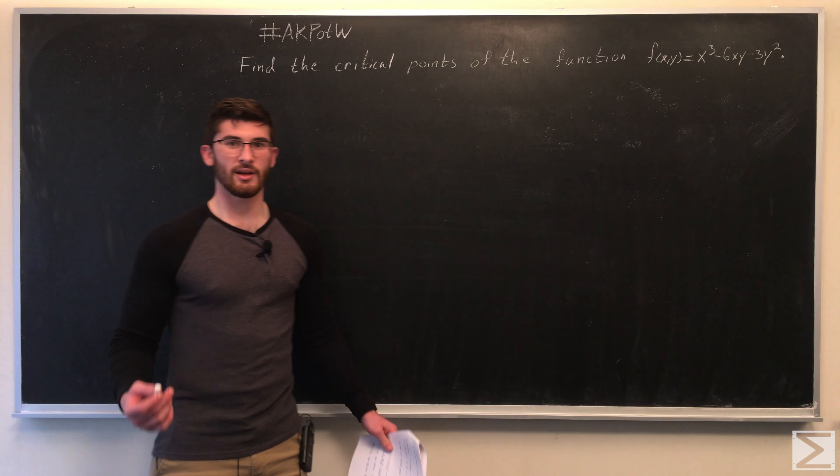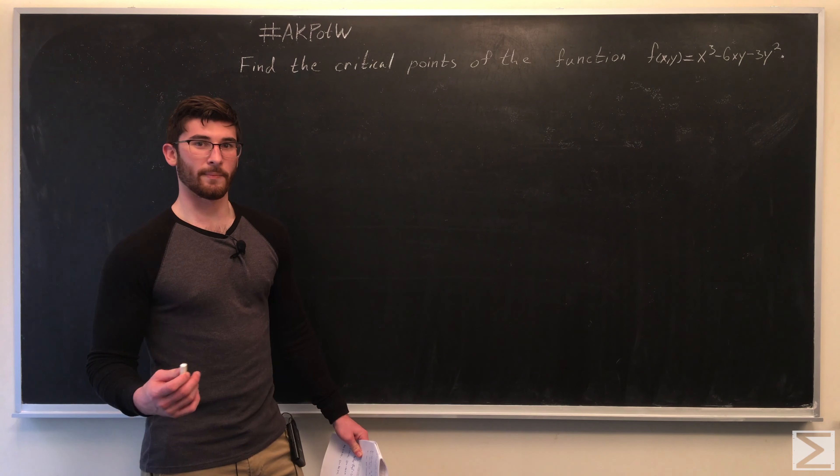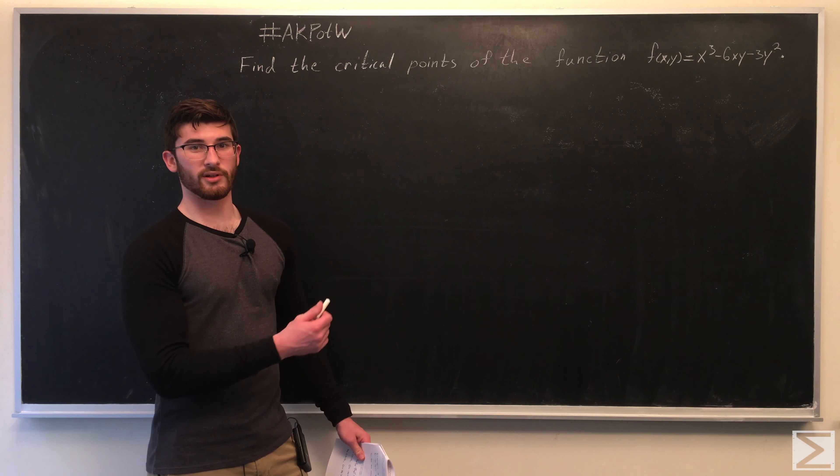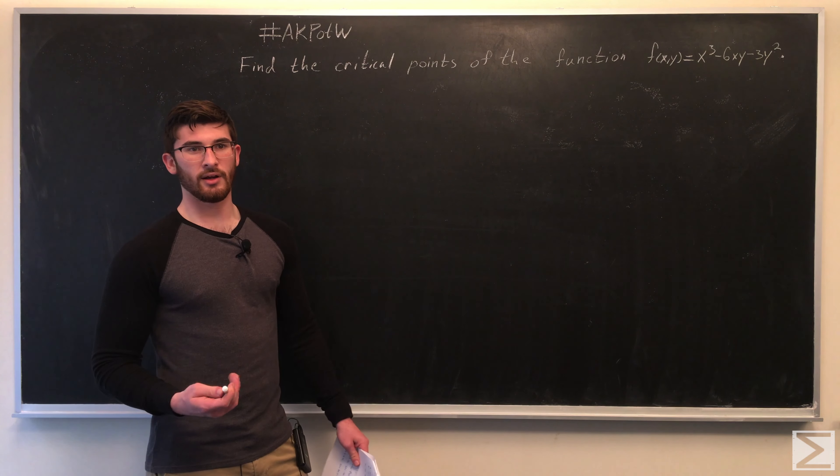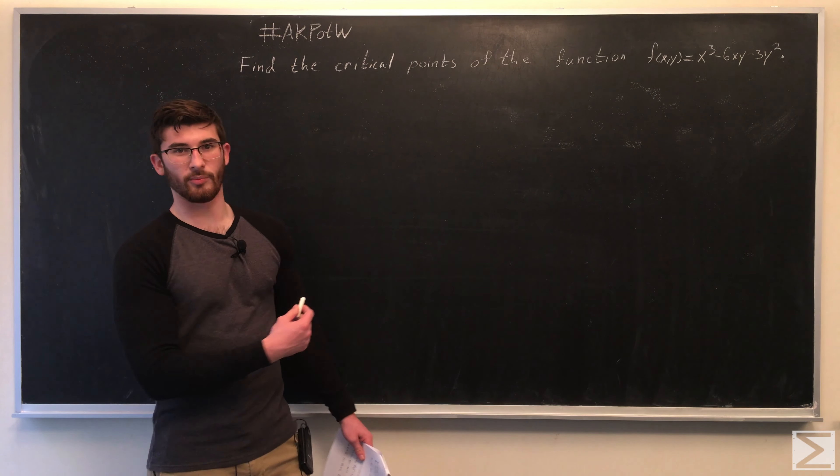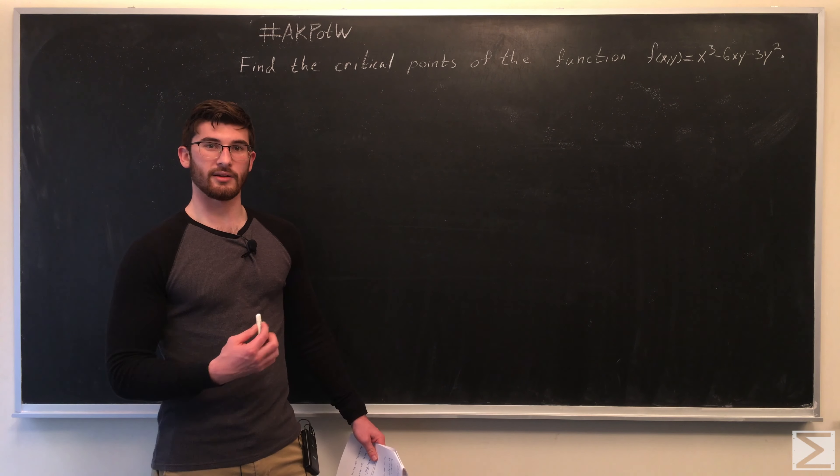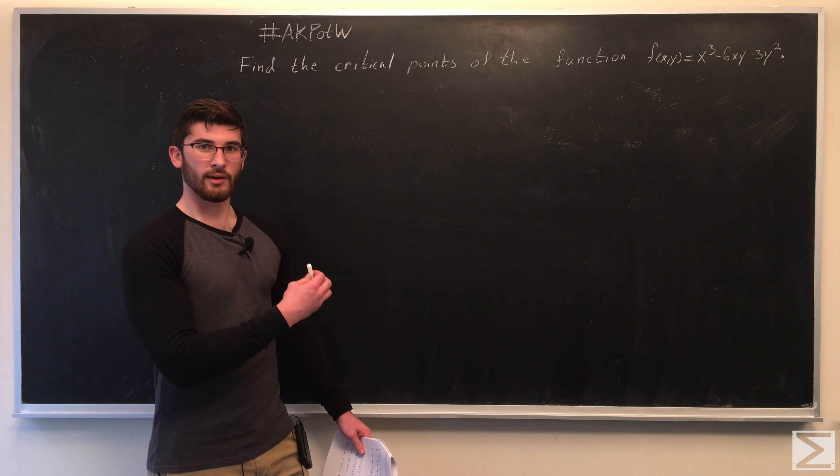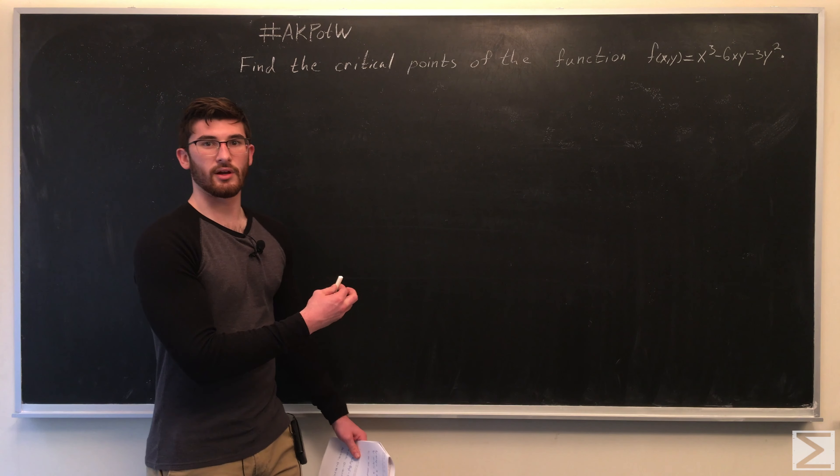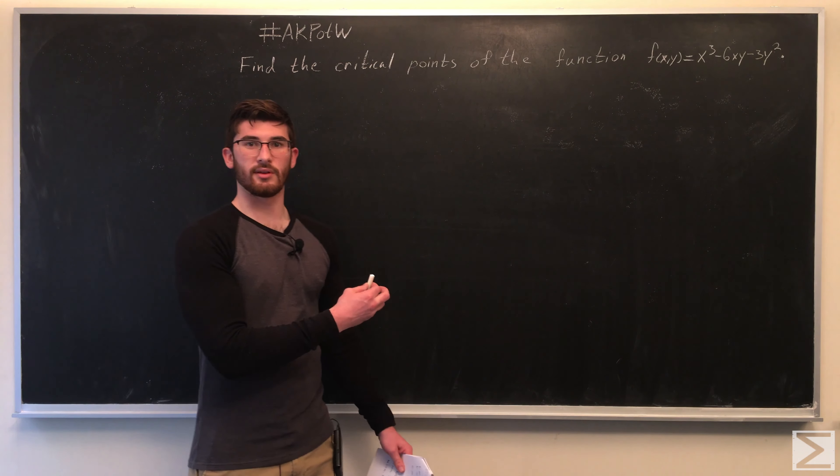To do this, it's very similar to finding the critical points for a single variable function. Critical points are going to occur at points where the gradient vector of the function equals the zero vector. So let's go ahead and take the gradient vector of our function and then move from there.